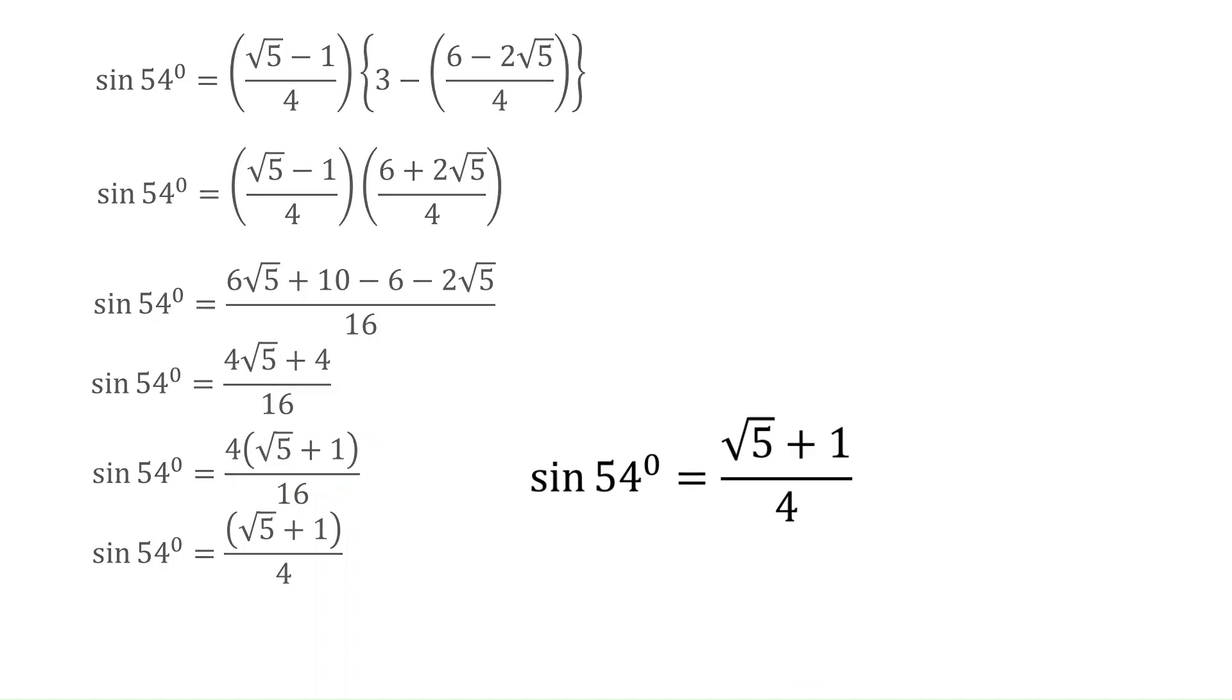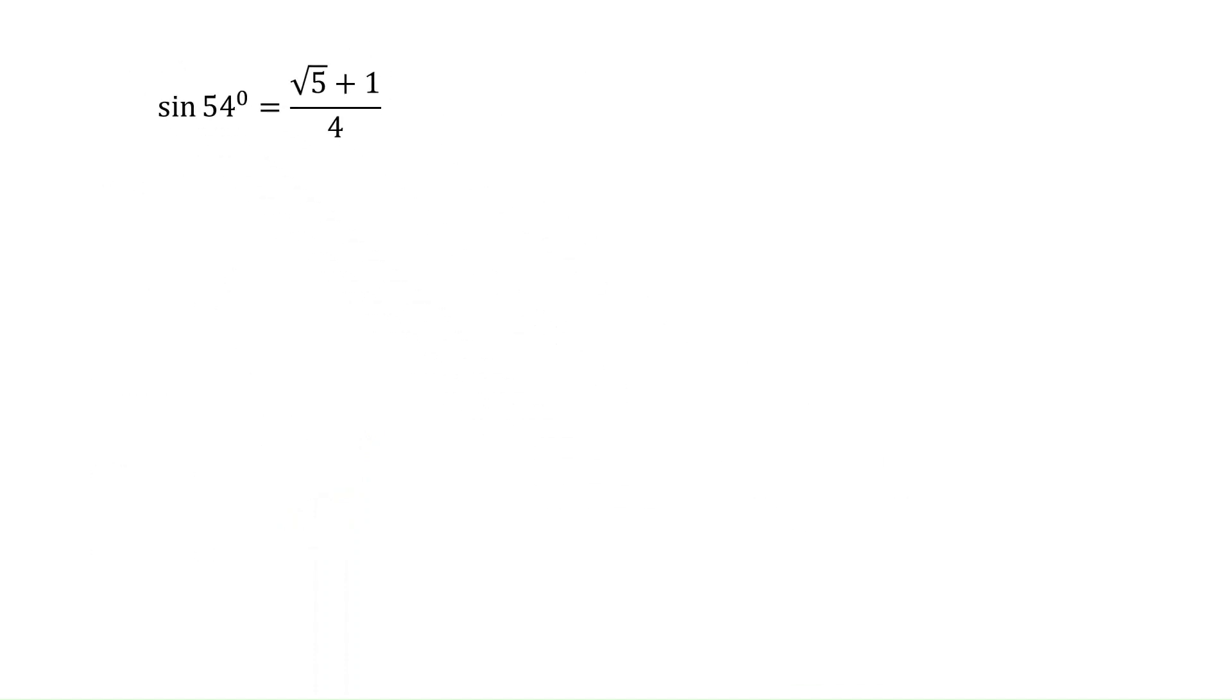Now we use this sine 54 value to find the value of cos 36 and cos 54. Sine and cos are co-functions which means sine theta equal to cos of 90 minus theta. In place of theta, if we substitute 54, it becomes sine 54 equal to cos of 90 minus 54. 90 minus 54 is nothing but 36. So sine 54 and cos 36 are same and the value would be equal to root 5 plus 1 upon 4. From the sine value itself, we can find cos 54.